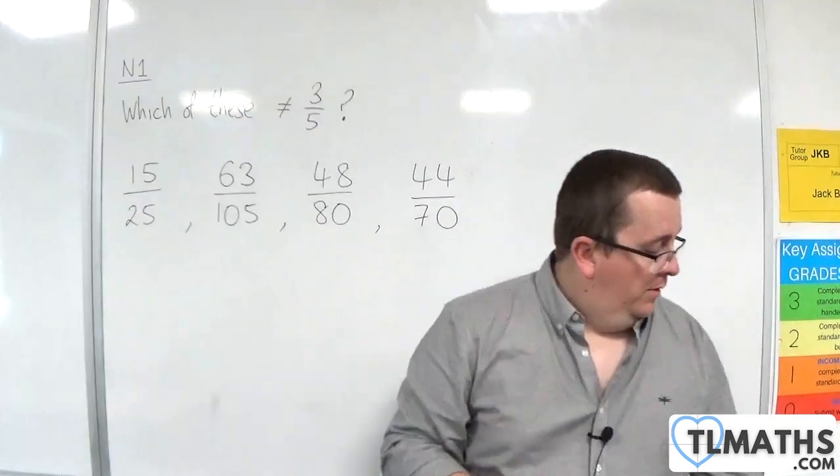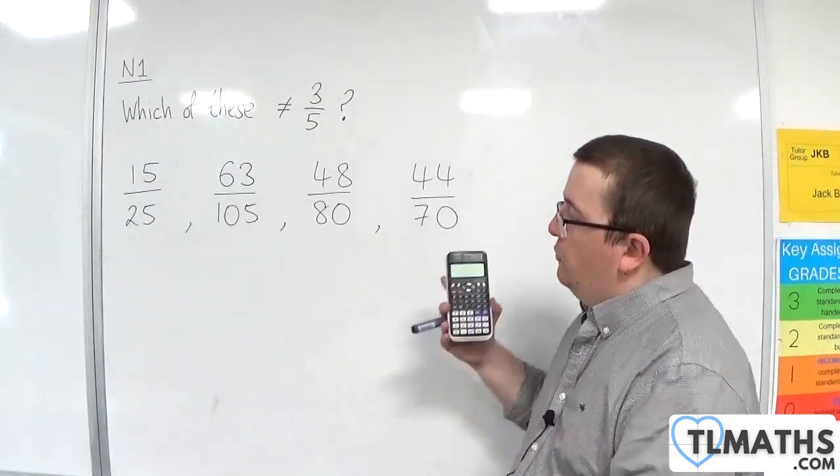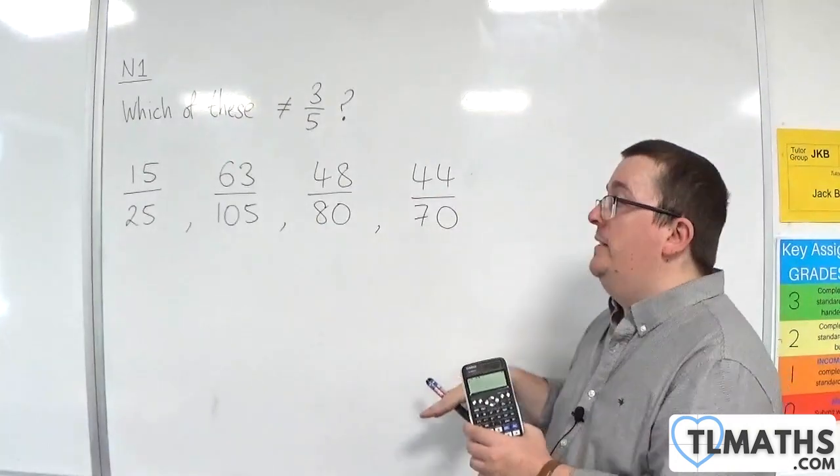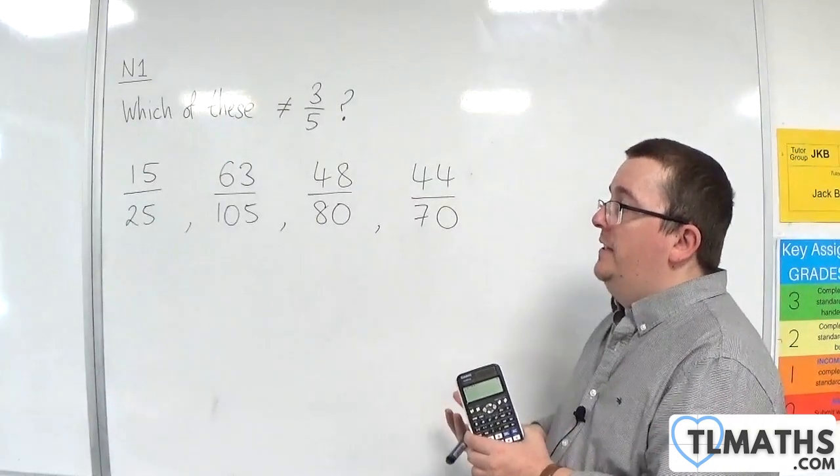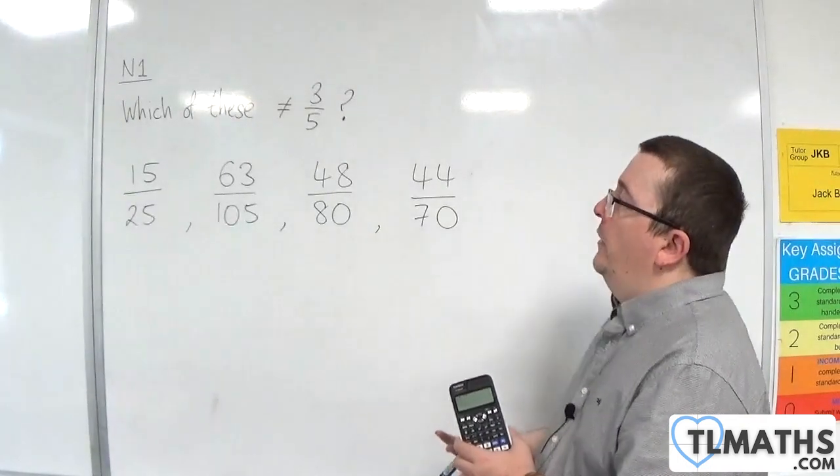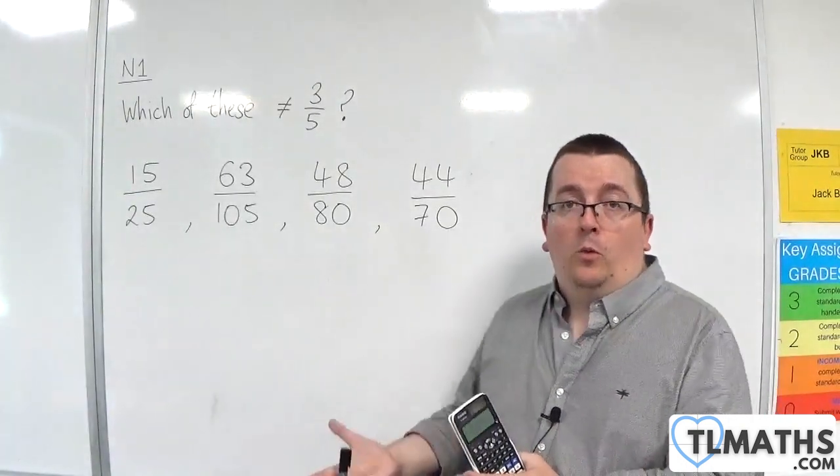So on my calculator, for example, if I type these numbers in, if I do numerator divided by denominator, it will automatically simplify the fraction down for me. And so I'll be able to make very quick work of this.